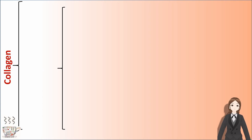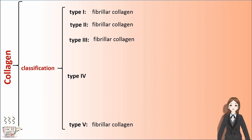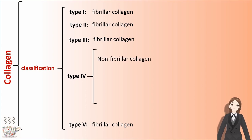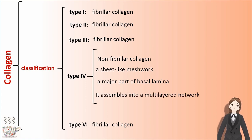Collagen can be divided into five subgroups: type 1, type 2, type 3, type 4, and type 5. Types 1, 2, 3, and 5 are fibrillar collagen, but type 4 is non-fibrillar collagen — it is a sheet-like mesh form, is a major part of the basal lamina, and assembles into a multi-layered network.